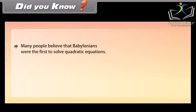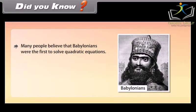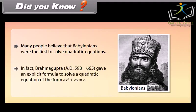Did you know? Many people believe that the Babylonians were the first to solve quadratic equations. In fact, Brahmagupta (AD 598–665) gave an explicit formula to solve a quadratic equation of the form ax² + bx = c.